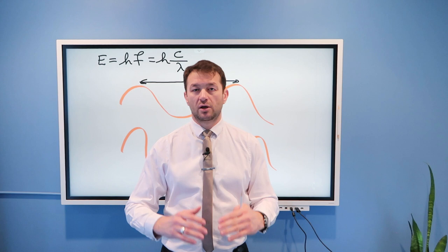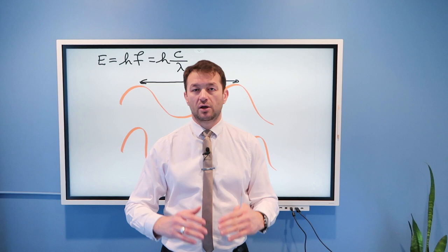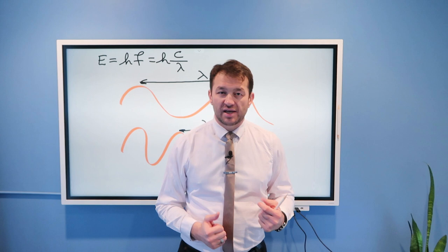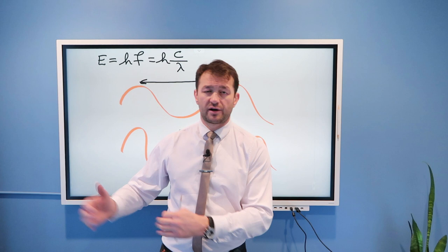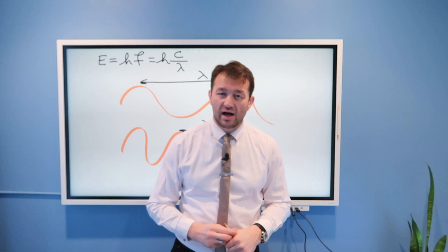And we know that from everyday experience. We know that ultraviolet light is high energy light. But it is high energy because it is such a short wavelength. Whereas visible light, infrared light, radio waves have long wavelengths and they do not cause harm to our body.